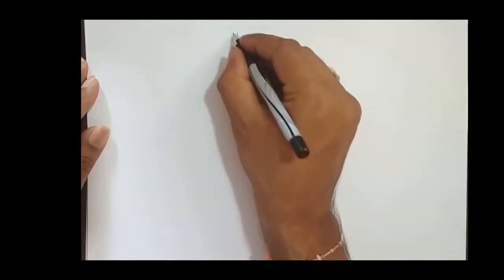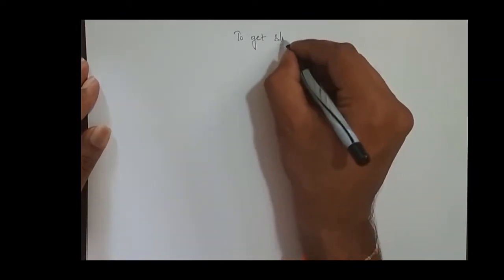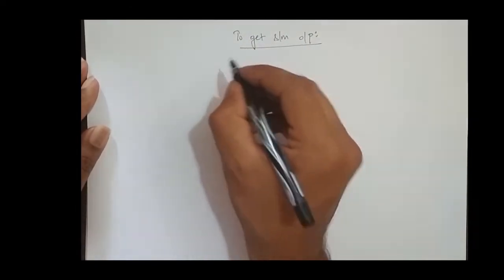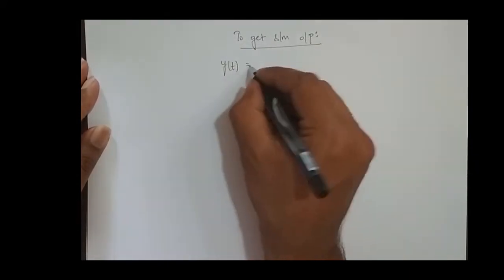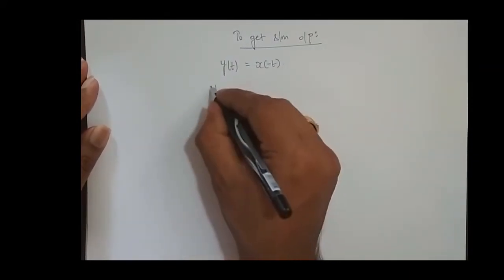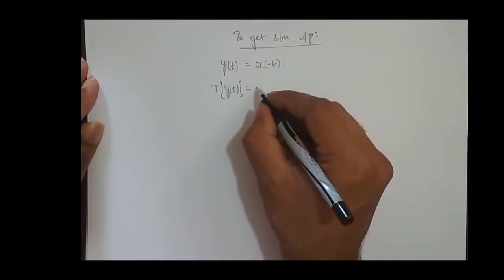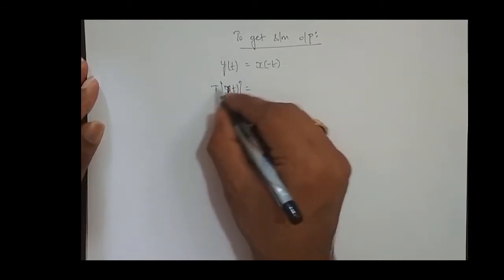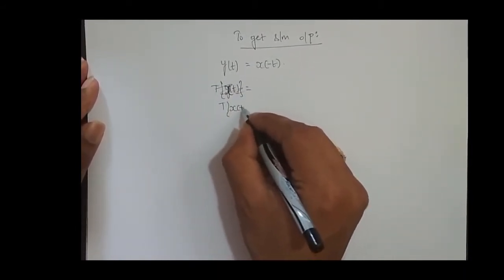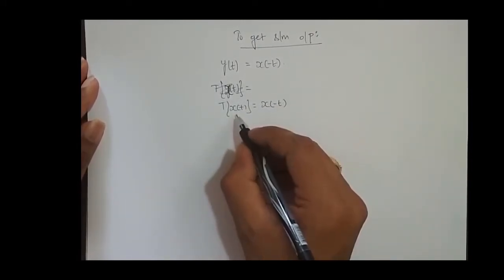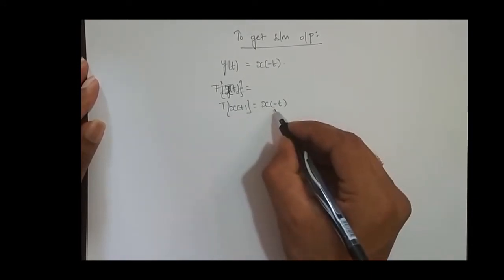Now we will check the system output. To get the system output we have to understand the system. The system is: y of t is x of minus t, so transformation of x of t is equal to x of minus t. What is happening in the system? Whatever signal I feed in, I get its time-reversed version of that signal.